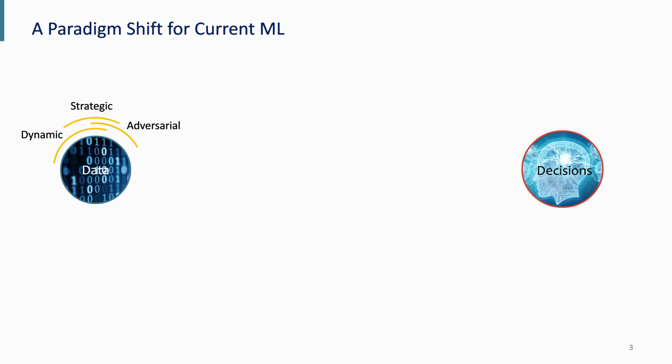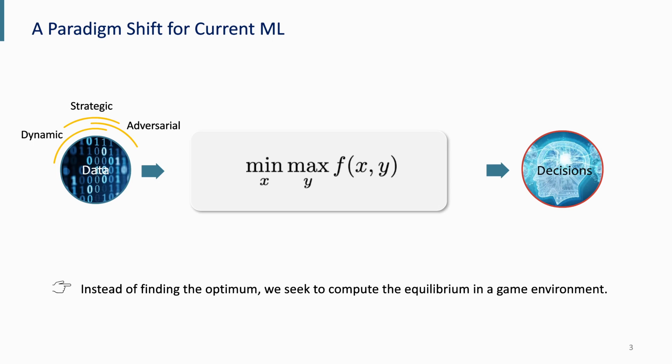On the other hand, in recent years we have seen a lot of emerging applications from machine learning where data are now generated from a non-stationary environment. This could be due to adversarial interactions with the environment, strategic behaviors of agents, or just the system dynamics underneath the environment. This really drives a huge paradigm shift from risk minimization to min-max optimization, where there are two agents: one tries to minimize the cost function and the other tries to maximize it. Instead of finding an optimal classifier, we're really trying to find an equilibrium for these two agents.